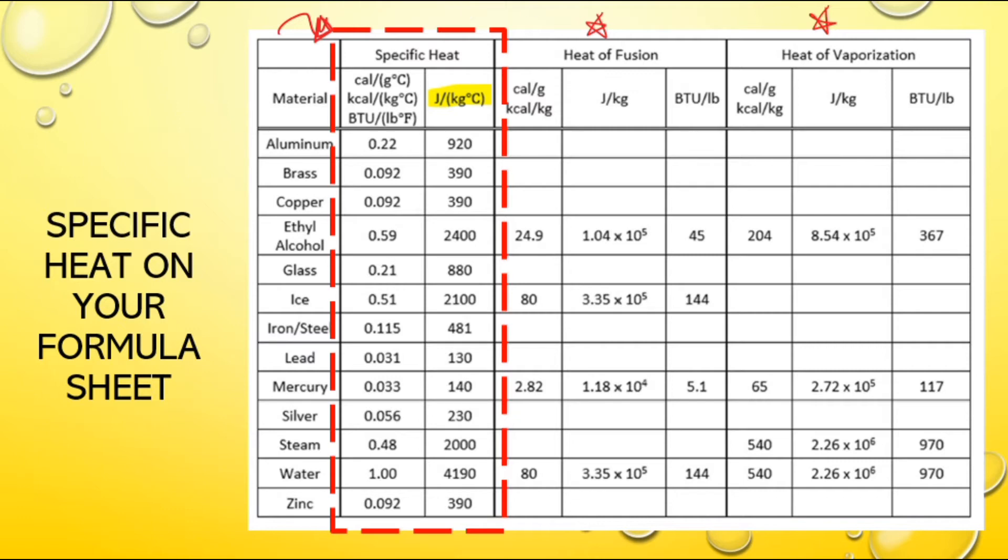What's interesting is if you are doing calories, gram, kilocalories and kilograms, or BTUs, both metric and imperial use the same value. Another interesting thing is we have three forms of water here: ice, steam, and water. They don't have the same specific heat. Specific heat depends on the material, but it also depends on the phase, solid, liquid, or gas.